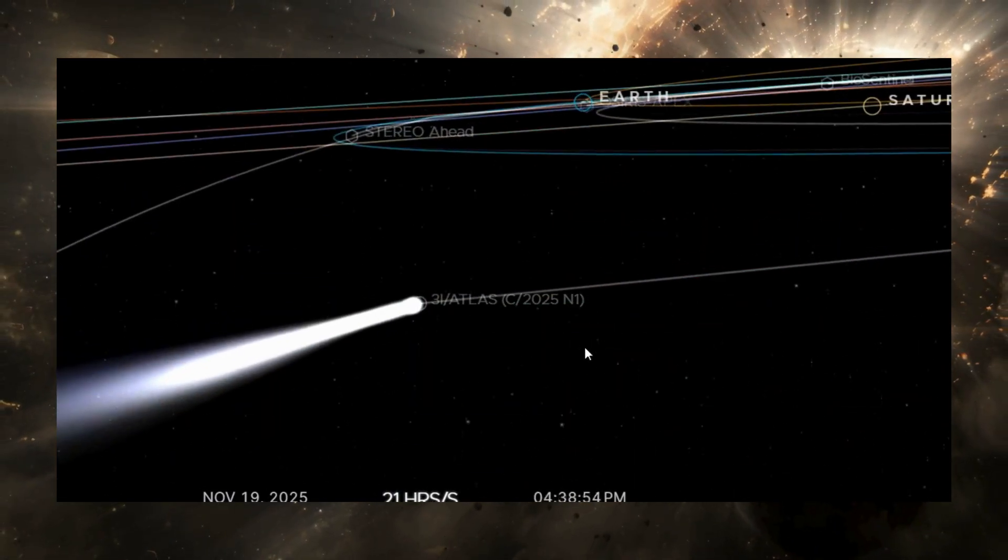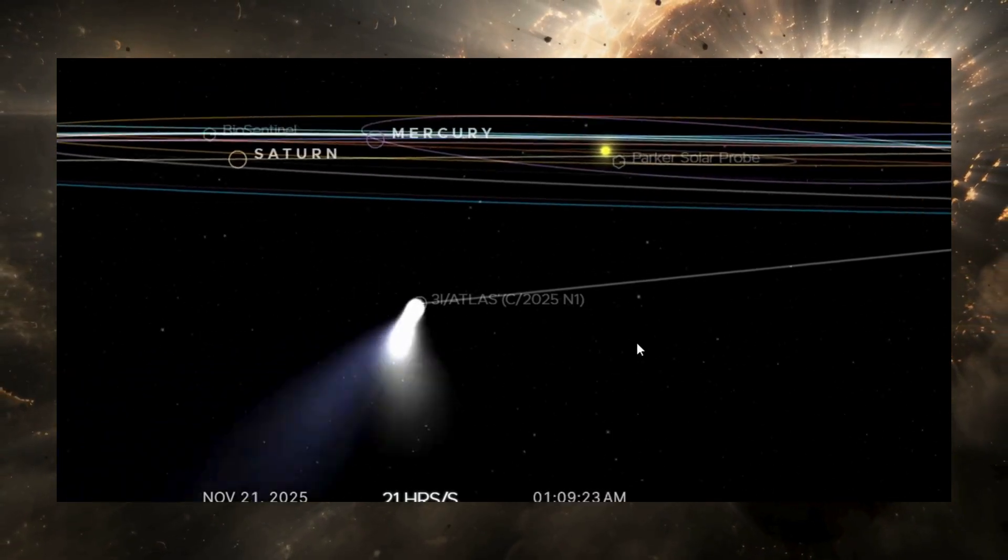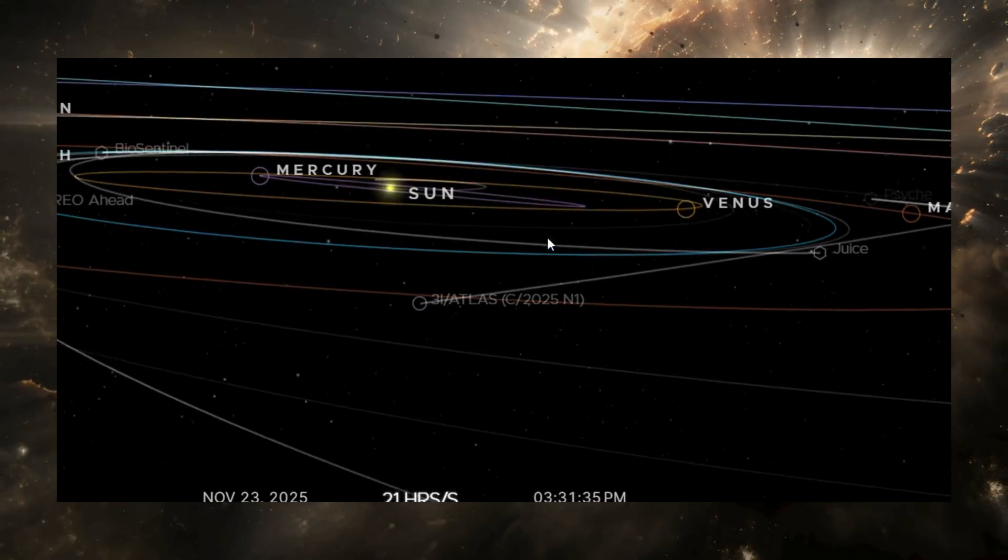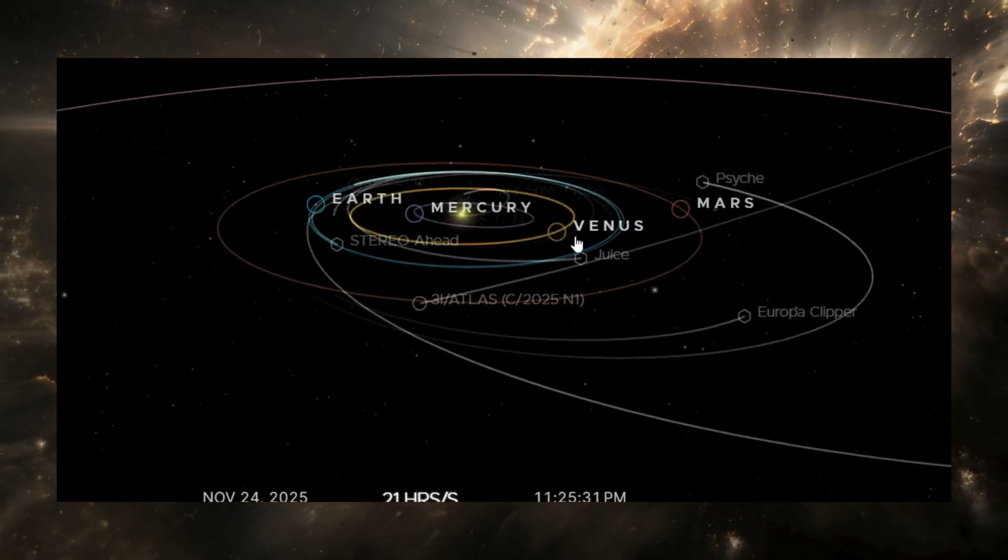One object. One trajectory. One anomaly. And four wildly different explanations, each with massive implications.